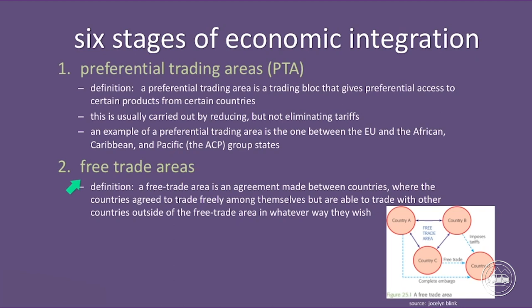The second stage of integration is called a free trade area. By definition, a free trade area is an agreement between countries where the countries agree to trade freely among themselves, but are able to trade with other countries outside of the free trade area in whichever way they wish. This is from Jocelyn Blink's textbook — an excellent econ course companion for the IB curriculum. You basically see country A, B, and C in a free trade area. A real-life example would be NAFTA — the North American Free Trade Agreement between the United States, Canada, and Mexico. All three of them can make their own trade deals with anybody who's not in the free trade area.